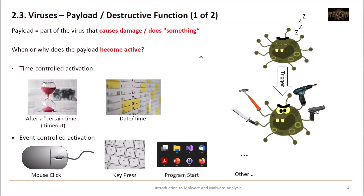Now let's look at the payload and the destructive function of viruses. The payload is the part of the virus that causes damage or at least does something. When does the payload become active? We have two types of activation. First, time-controlled activation — after a certain timeout, like an hour or two, or at a specific date or time, for example at Christmas. The second type is event-controlled activation — a mouse click, a key press, a program start, or any other event that can happen on a computer.